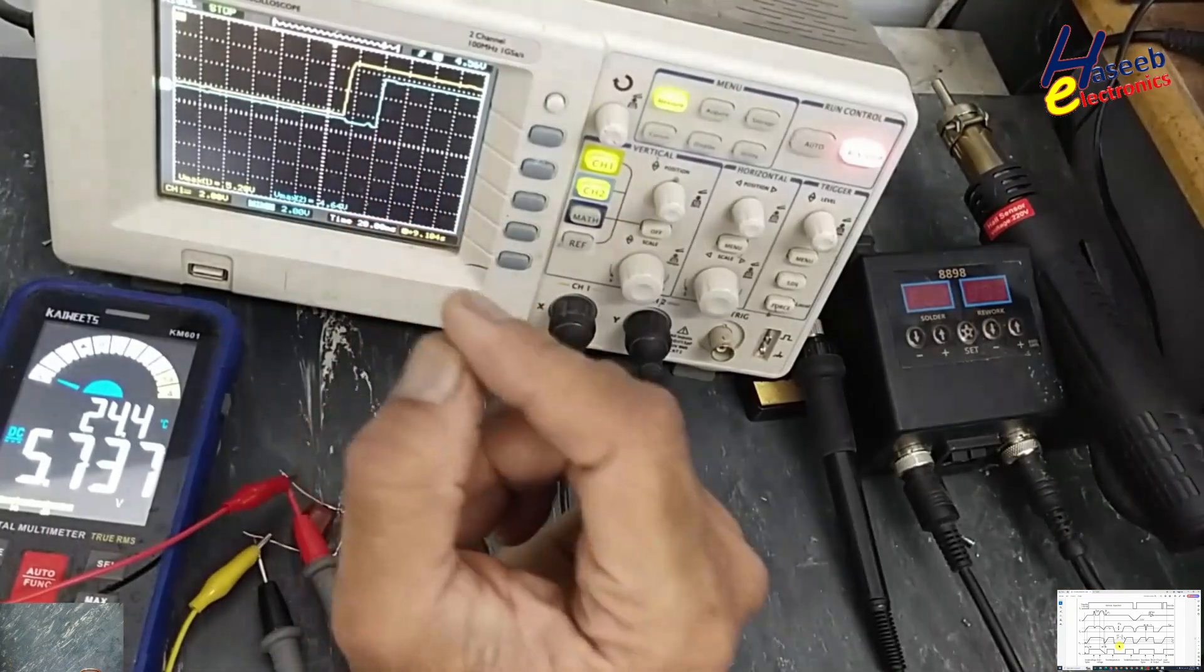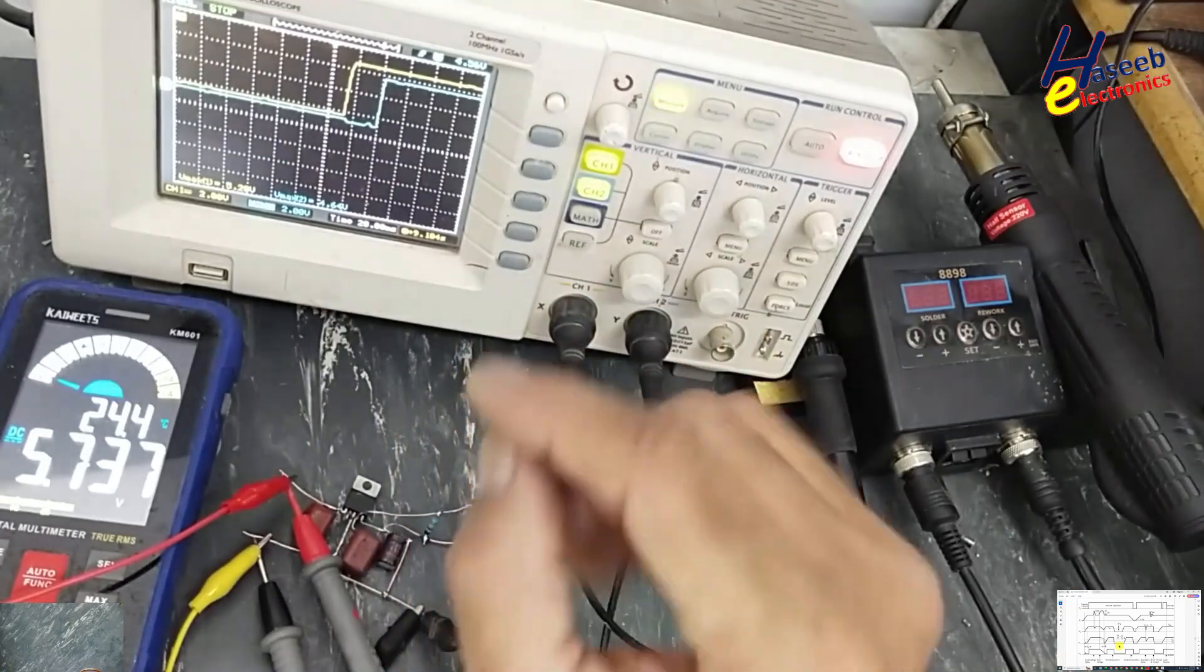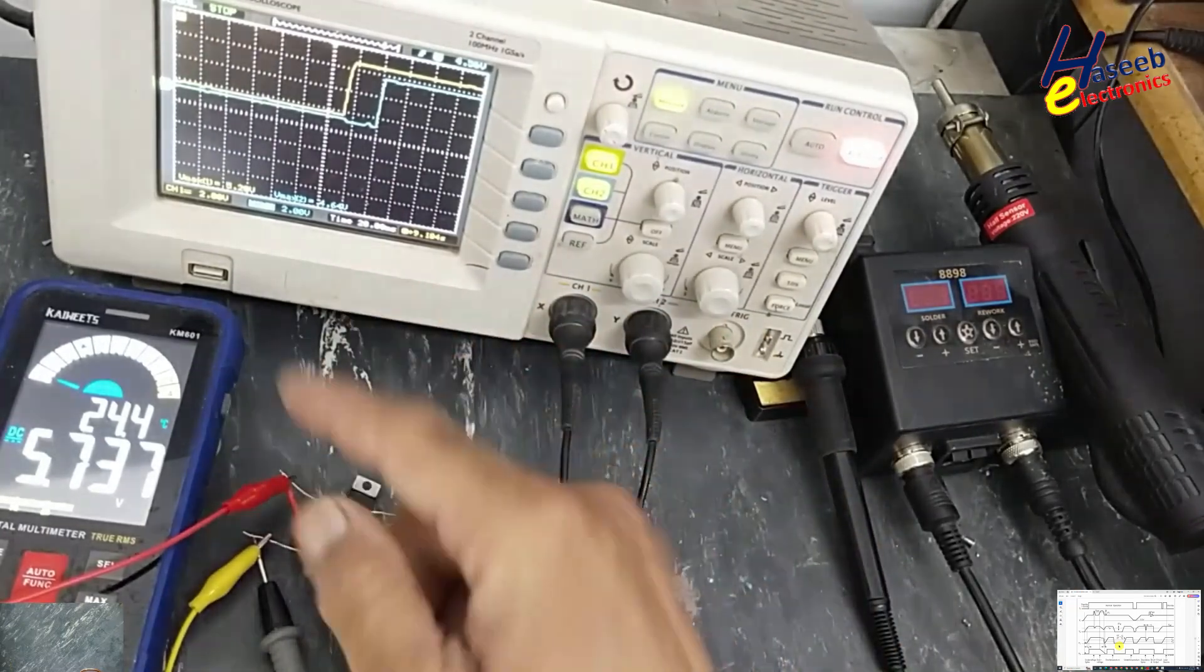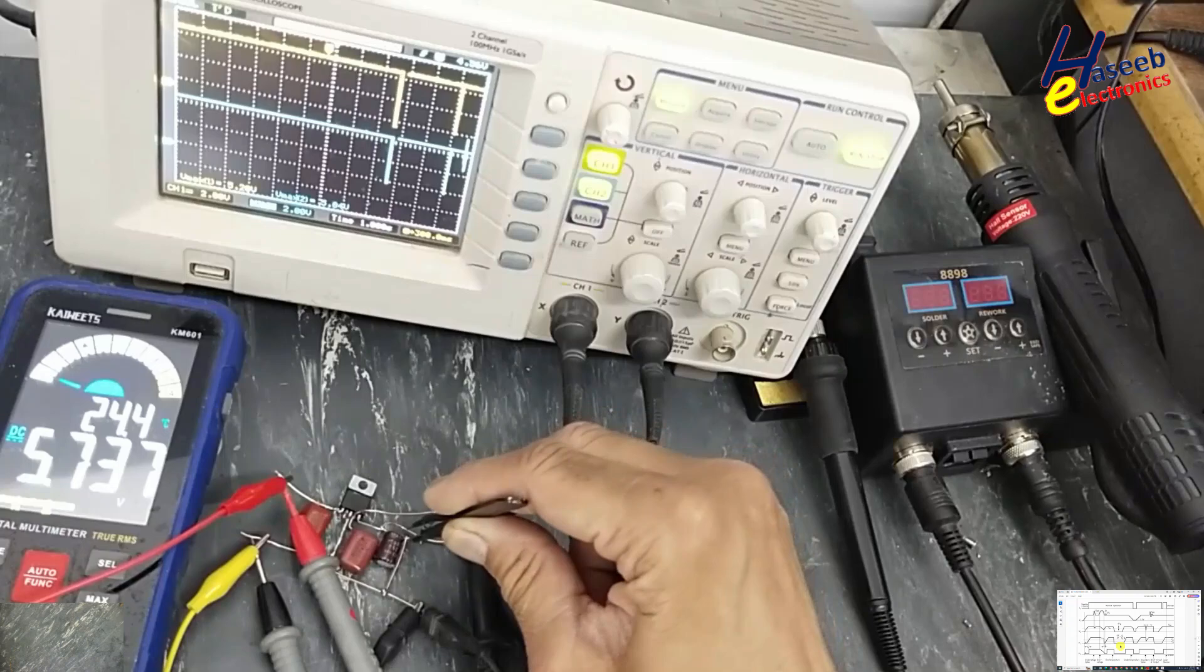This signal will intimate the processor that supply voltage is stabilized. Now the processor will start functioning. The output is short circuit to ground.